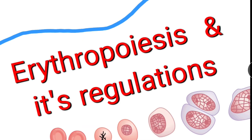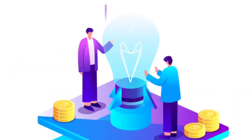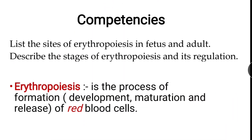Hello everyone, today we are going to discuss erythropoiesis and its regulation. It is one of the most hot topics in blood physiology, so you must know that at least one or the other question comes from erythropoiesis and associated topics. I am going to cover only two competencies in this class: listing the sites of erythropoiesis in fetus and adult, and describing the stages of erythropoiesis and its regulation.